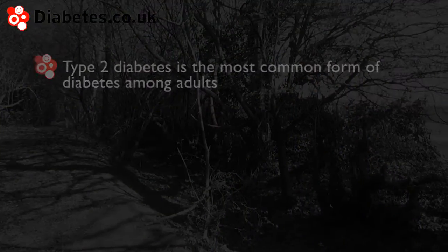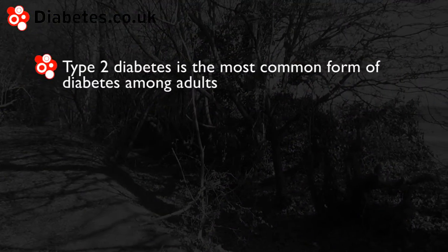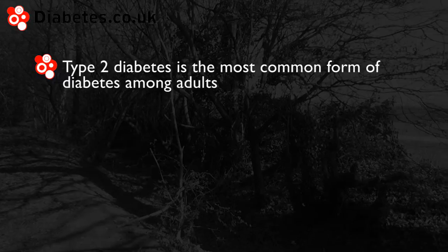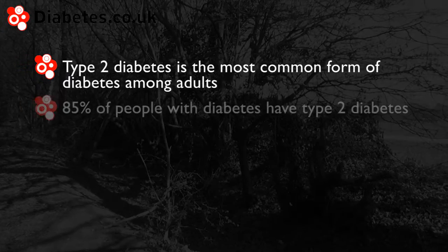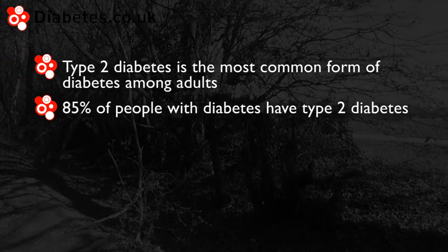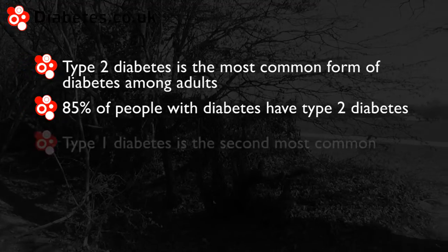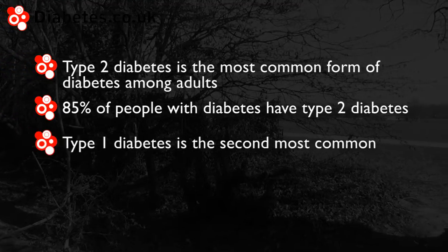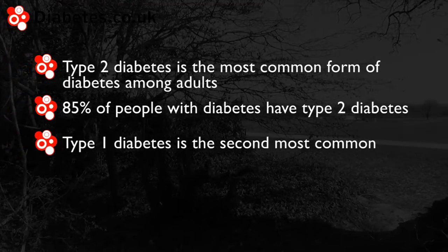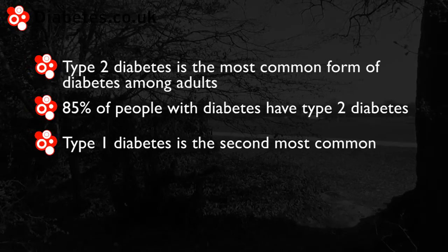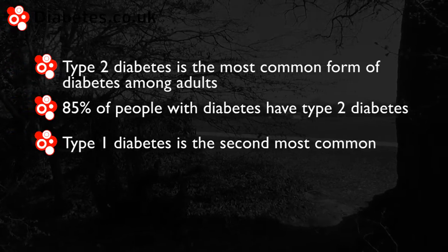There are a number of different types of diabetes. In this video we look at the five most common types. Type 2 diabetes is the most common form of diabetes amongst adults — about 85% of people with diabetes in the UK have type 2 diabetes. Type 1 diabetes is the second most common, with approximately 15% of people with diabetes in the UK having type 1.